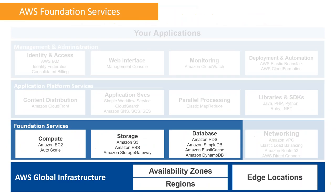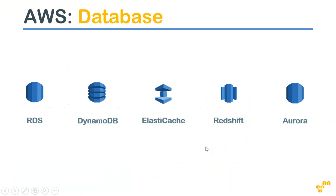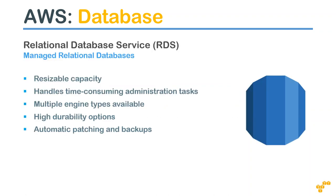The next group of services is databases. Amazon provides multiple options from NoSQL to SQL to warehousing and caching. The first and most important is RDS - Relational Database Service - which is Amazon's SQL as a service in the cloud. When running a three-tier or two-tier architecture, data is usually stored in a database - on-premise commonly MS SQL Server or Oracle.